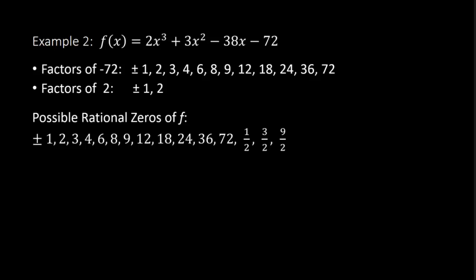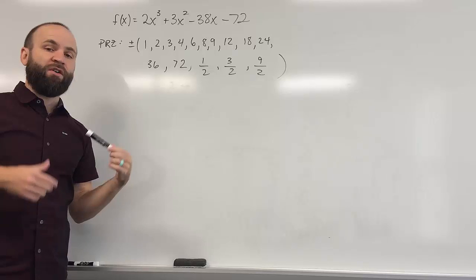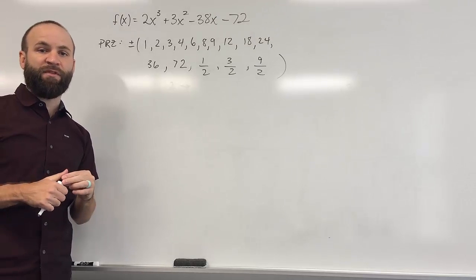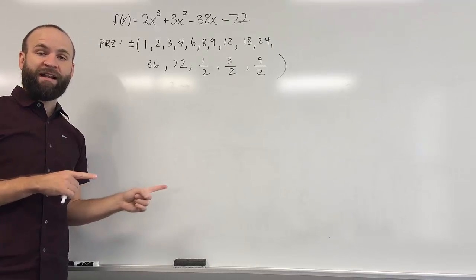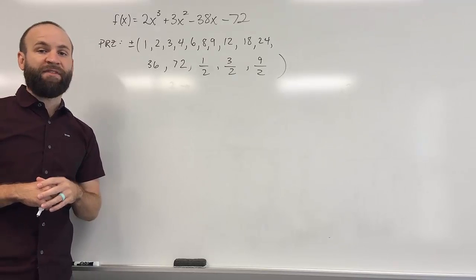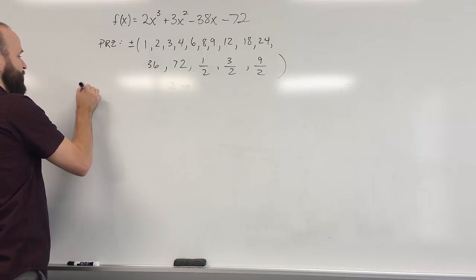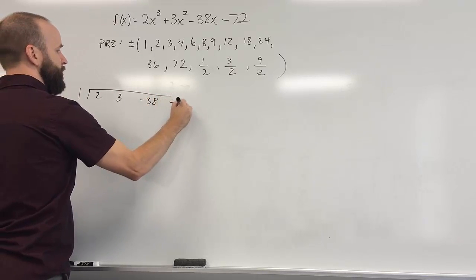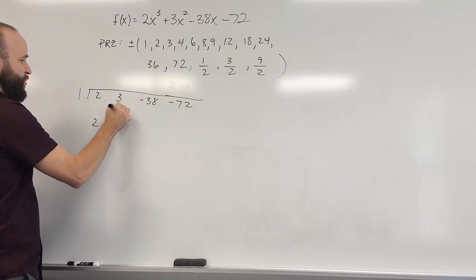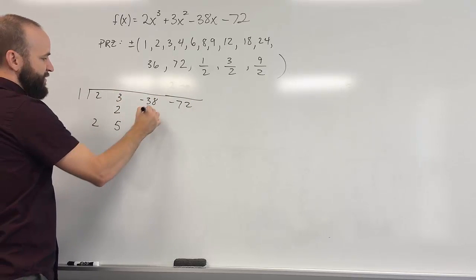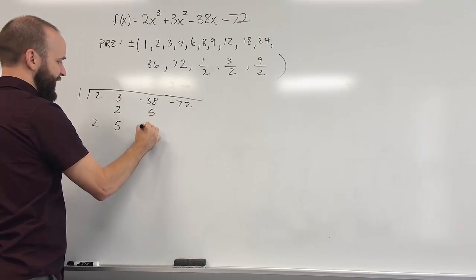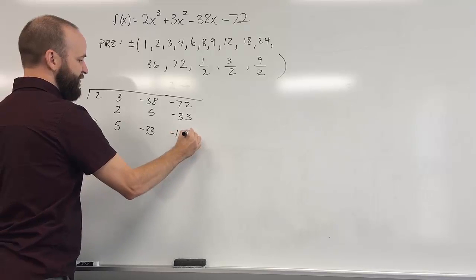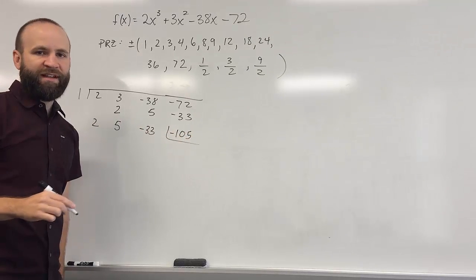Let's start trying some of these numbers using synthetic division. Trying 1: 2; 2×1=2; 3+2=5; 5×1=5; −38+5=−33; −33×1=−33; −72+(−33)=−105. So f of 1 is −105. 1 is not a zero. Then trying 2: 2; 2×2=4; 3+4=7; 7×2=14; −38+14=−24; −24×2=−48; −72+(−48)=−120. So f of 2 is −120, also not a zero.